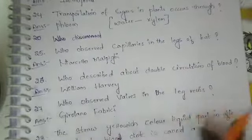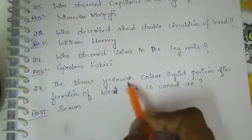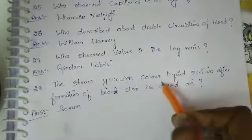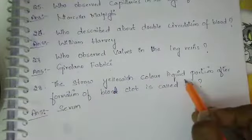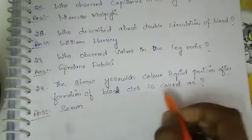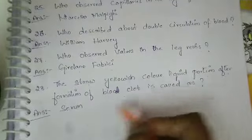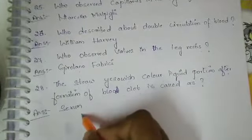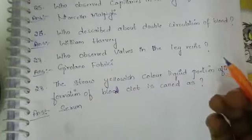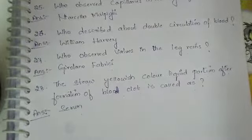Girolamo Fabrici observed valves in the leg veins. The strong yellowish colored liquid portion remaining after the formation of a blood clot is called serum. If you liked the video, please like, share, and subscribe to the channel.